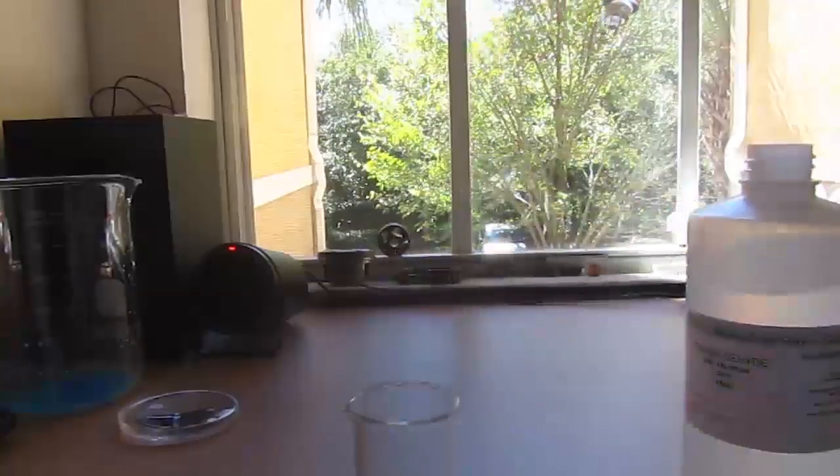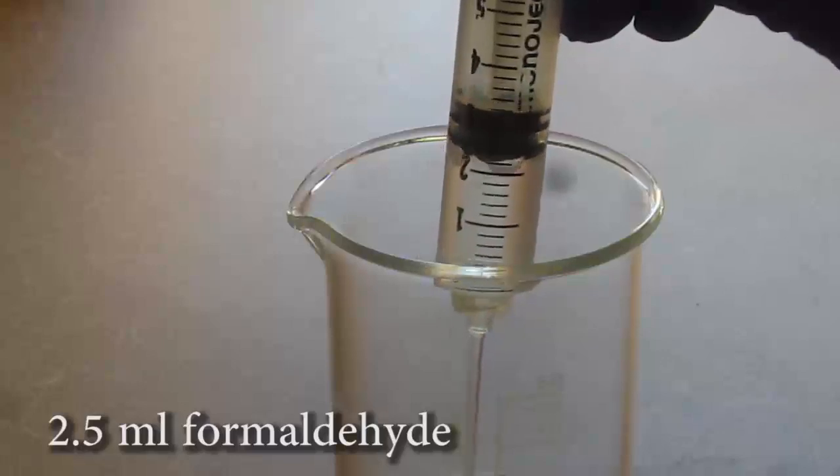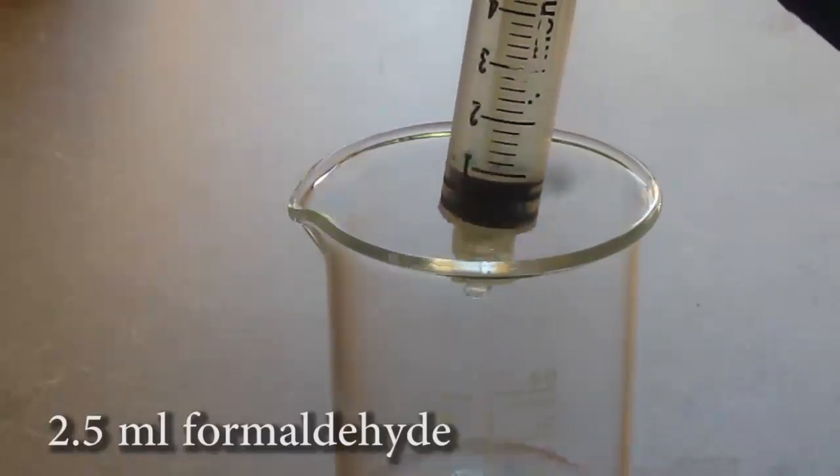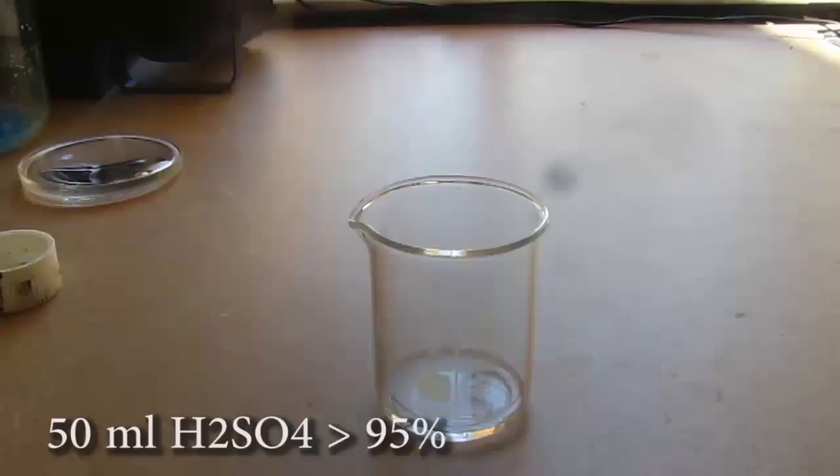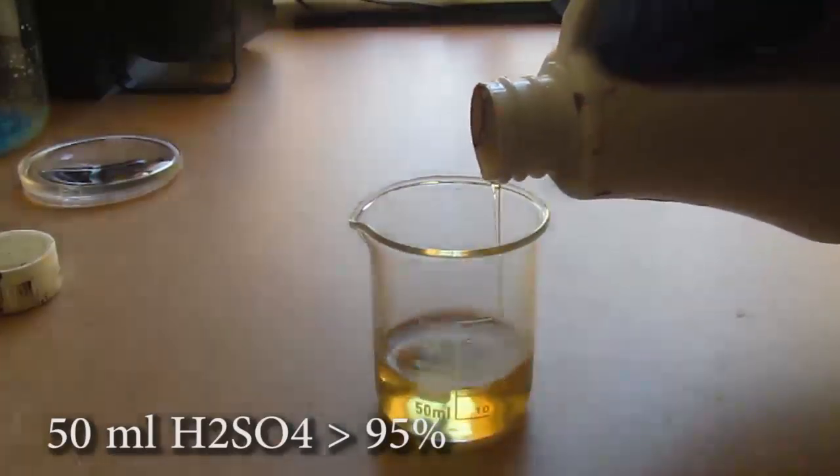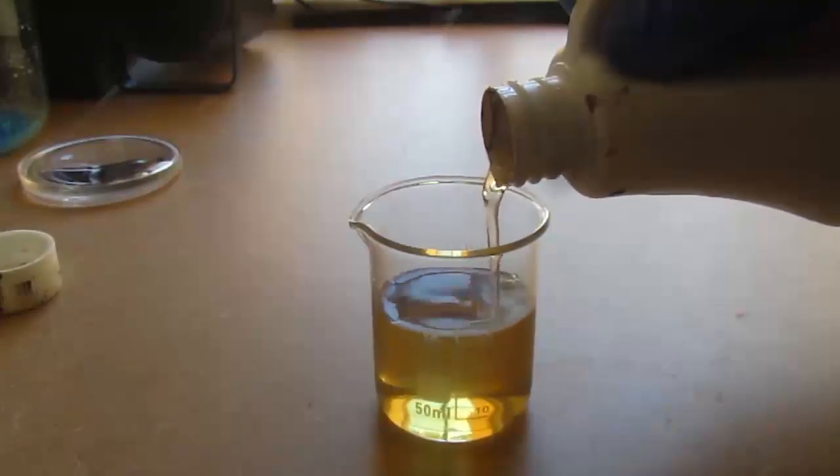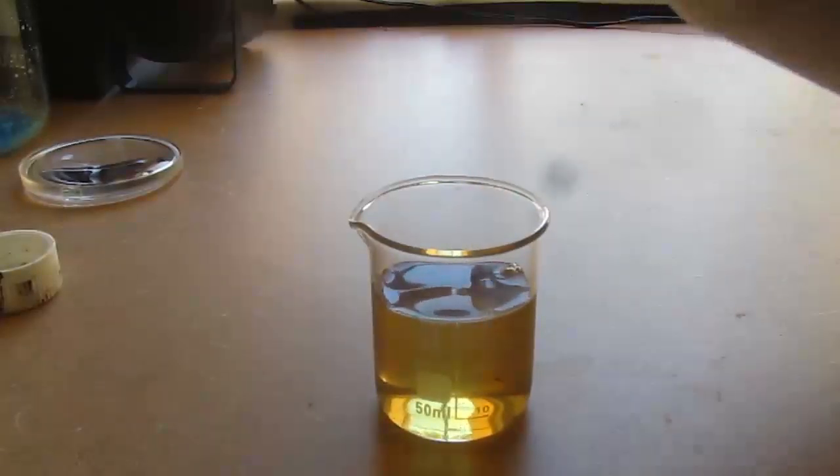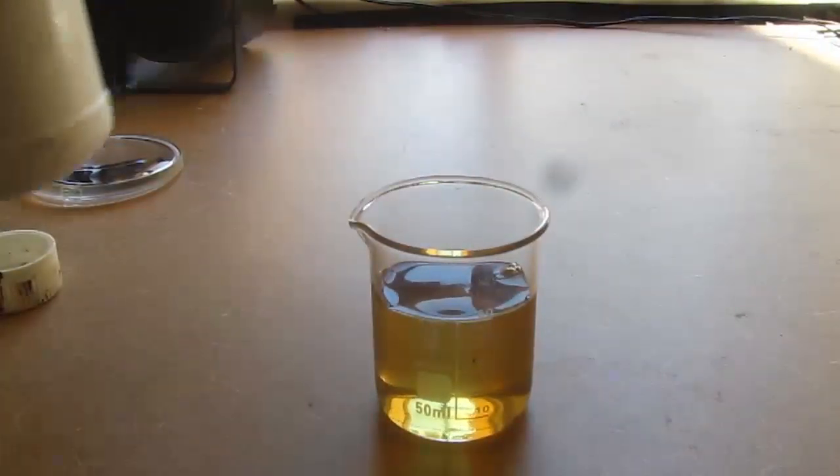Not that you'd ever need that much, but the first thing we do is 2.5 milliliters of our formaldehyde solution. It's important to add that first. Then we add 50 milliliters of chilled, cool hydrous sulfuric acid. And it's important to be chilled because you see the smoke coming off this formaldehyde being released from the heat.